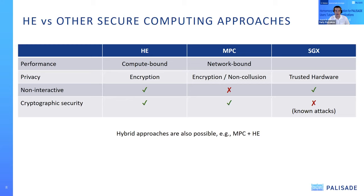In terms of cryptographic security, both HE and MPC are based on standard or near-standard assumptions. Secure guard extensions have had several known attacks discovered in the past three to four years. It's also worth noting that there are quite a few applications where it makes sense to combine these techniques — for example, homomorphic encryption can be combined with MPC in some scenarios.